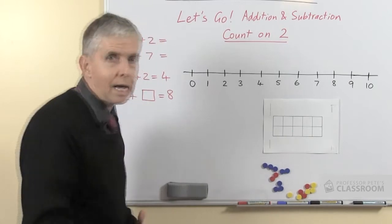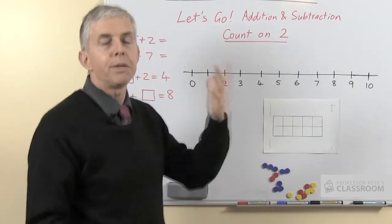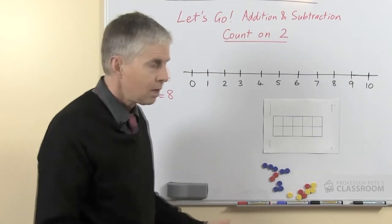What number would we make there? And then after a while not put any counters out and say can you picture 5 counters, now picture another 2, what number would that be? And so on.